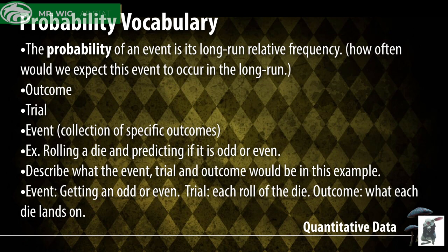A trial would be a certain event occurring. A trial would be rolling a die, or maybe rolling it five times, so that trial would consist of a number of different things. A trial is essentially a collection of events that we want to talk about, concluding one thing we're looking for to happen. An event could be like rolling a die and flipping a coin — those two events collecting together to form my full trial.